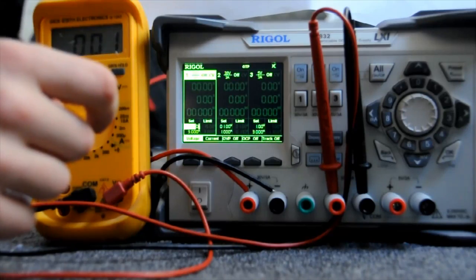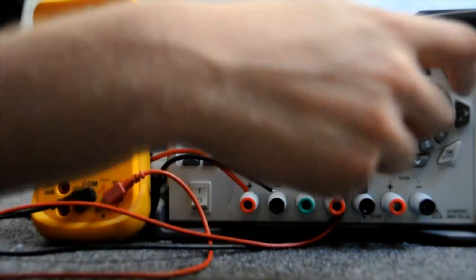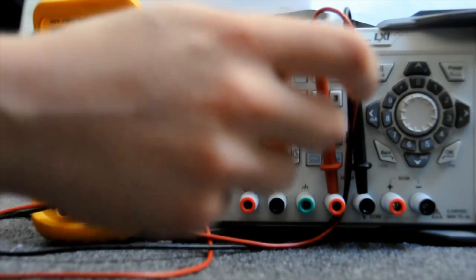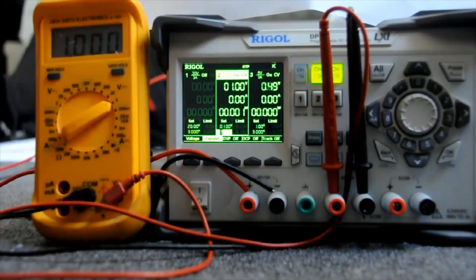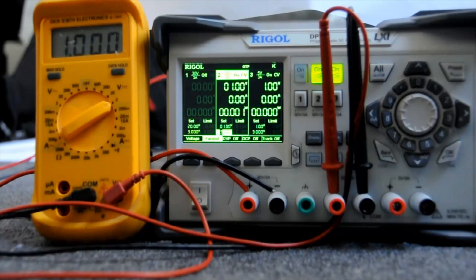So I'm going to set both these channels. They're both set to 1 volt and 3 amp output. Okay, so if we turn the two channels on, we see 1 volt being generated. So that's perfect. There's nothing wrong there.